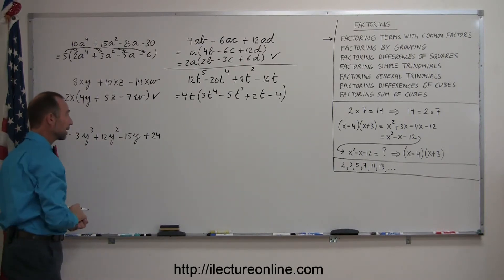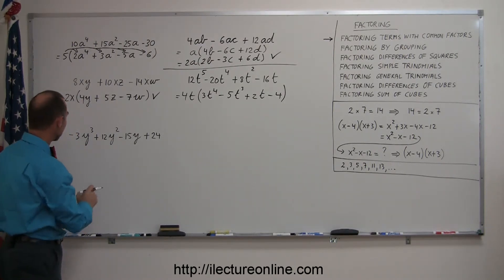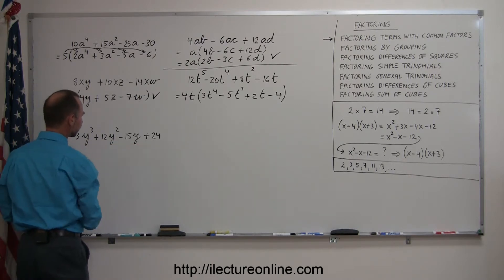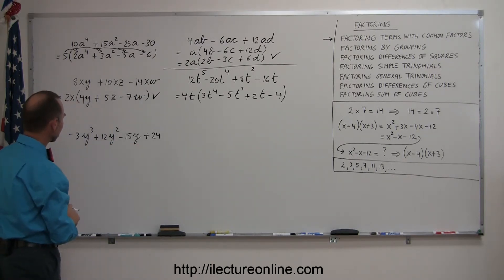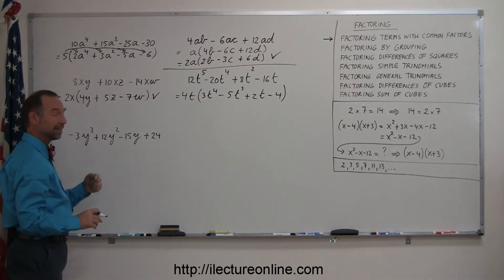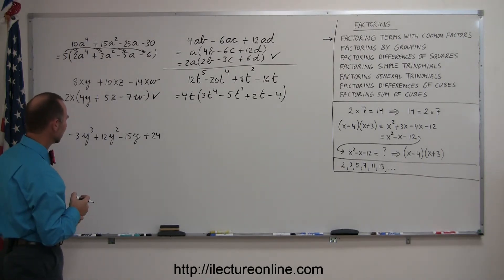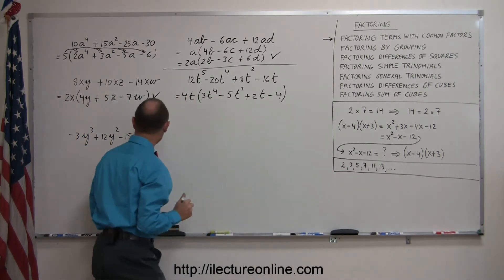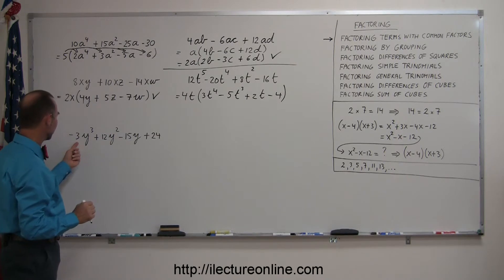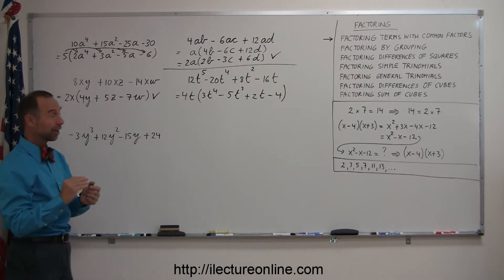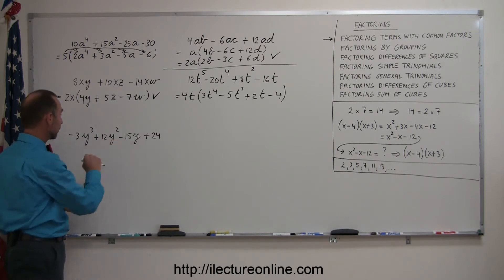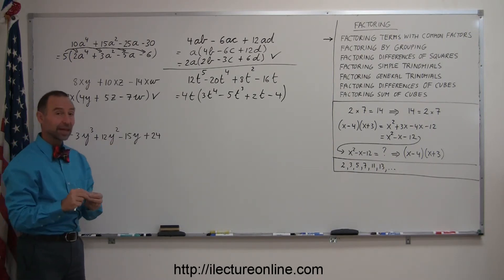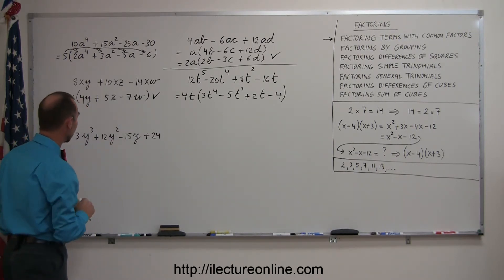Finally, going to my last one here, again, I have four terms. It looks like the numbers are not all even, because I have a 3 there and a 15, so I definitely cannot factor out a 2, but if I look carefully, maybe the next prime number, the number 3, can be factored out, and sure enough, 3 is divisible by 3, so is 12, so is 15, and so is 24. So that's how you can tell that every one of the terms is divisible by the same number, therefore you can factor out that number.